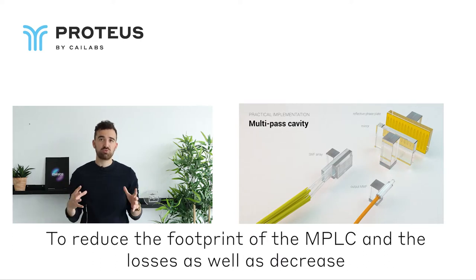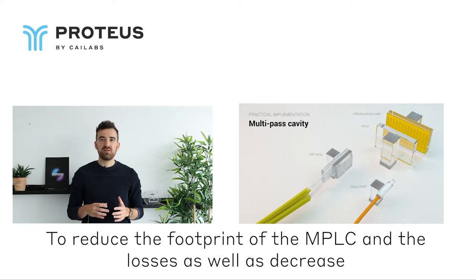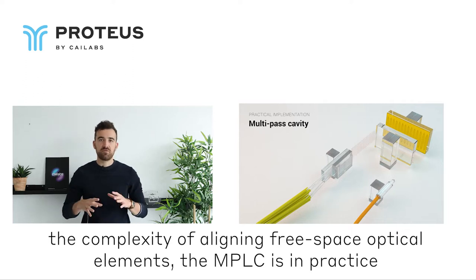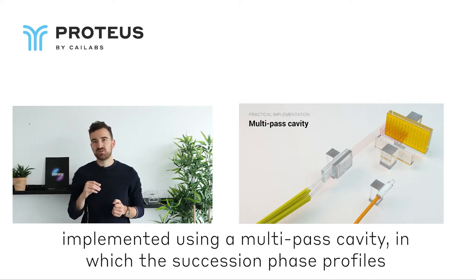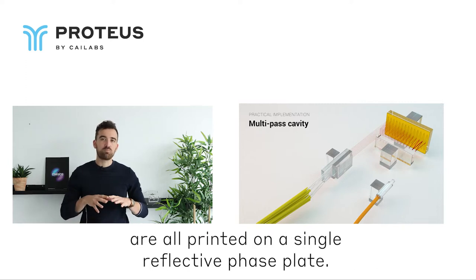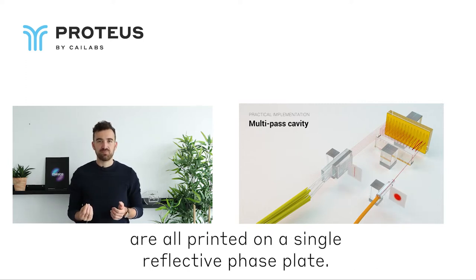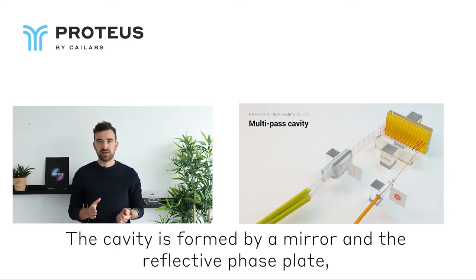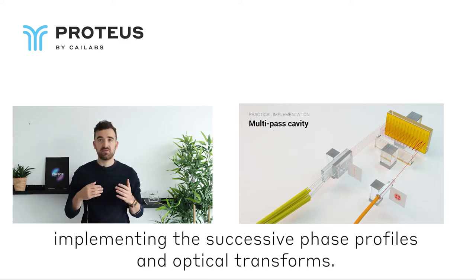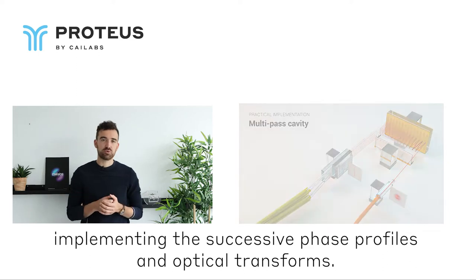To reduce the footprint of the MPLC and the losses, as well as decrease the complexity of aligning free space optical elements, the MPLC is in practice implemented using a multipass cavity in which the succession of phase profiles are all printed on a single reflective phase plate. The cavity is formed by a mirror and the reflective phase plate, implementing the successive phase profiles and optical transforms.